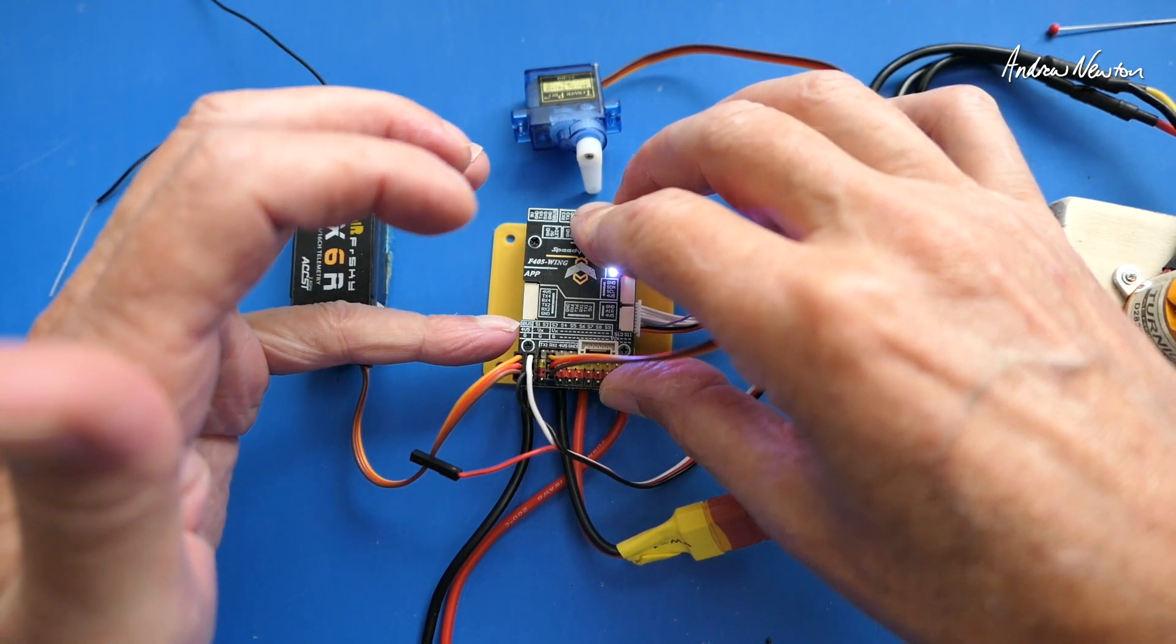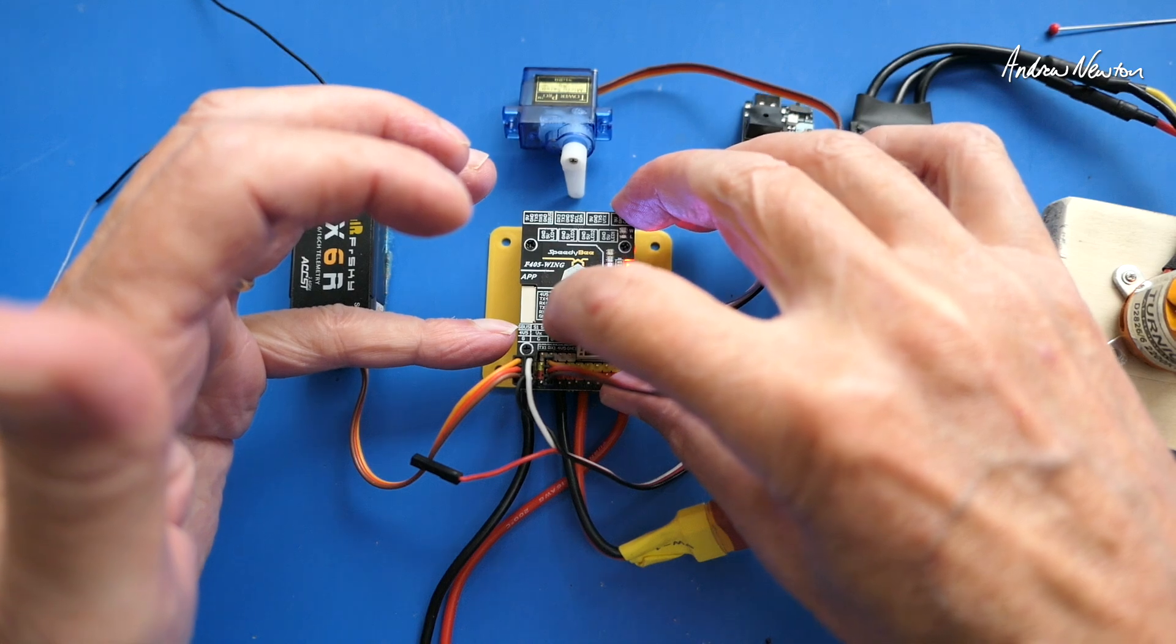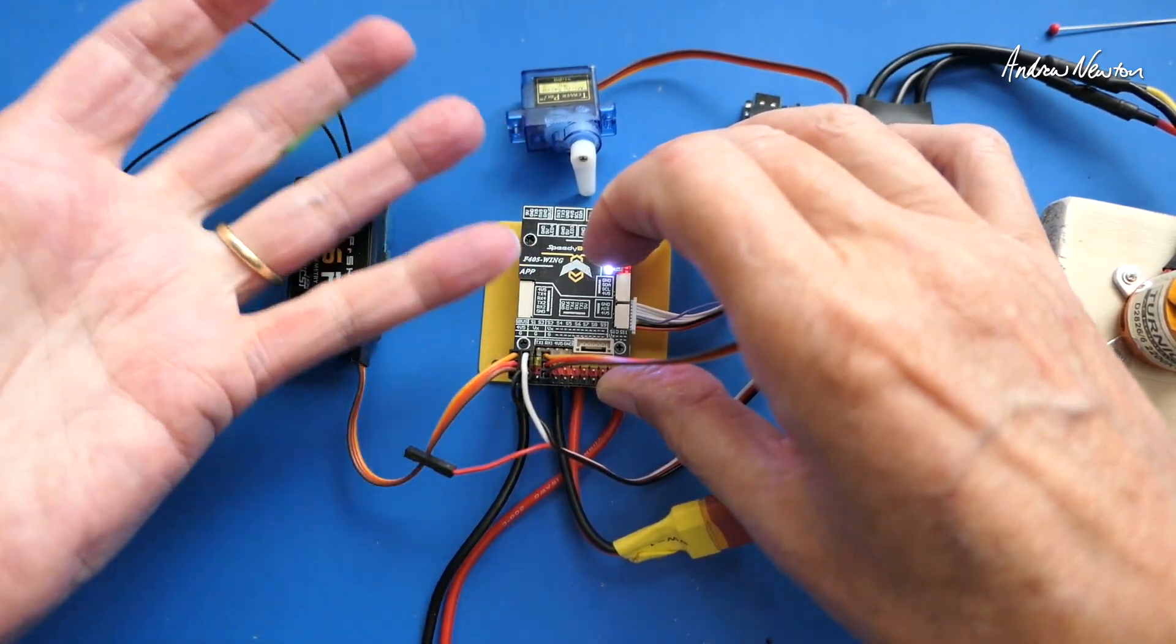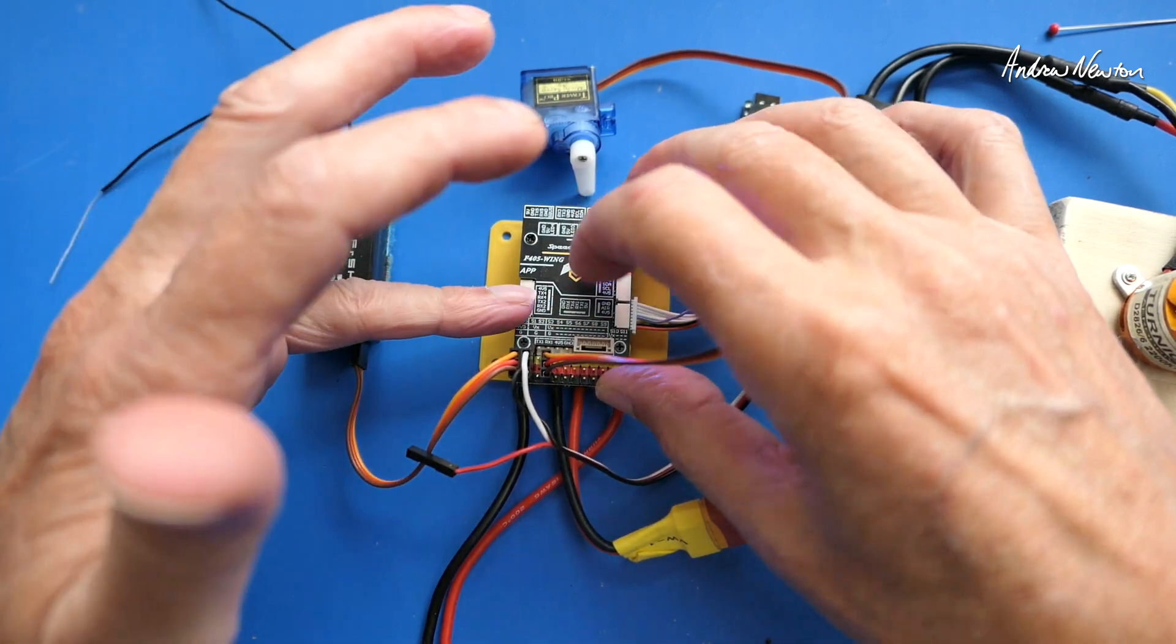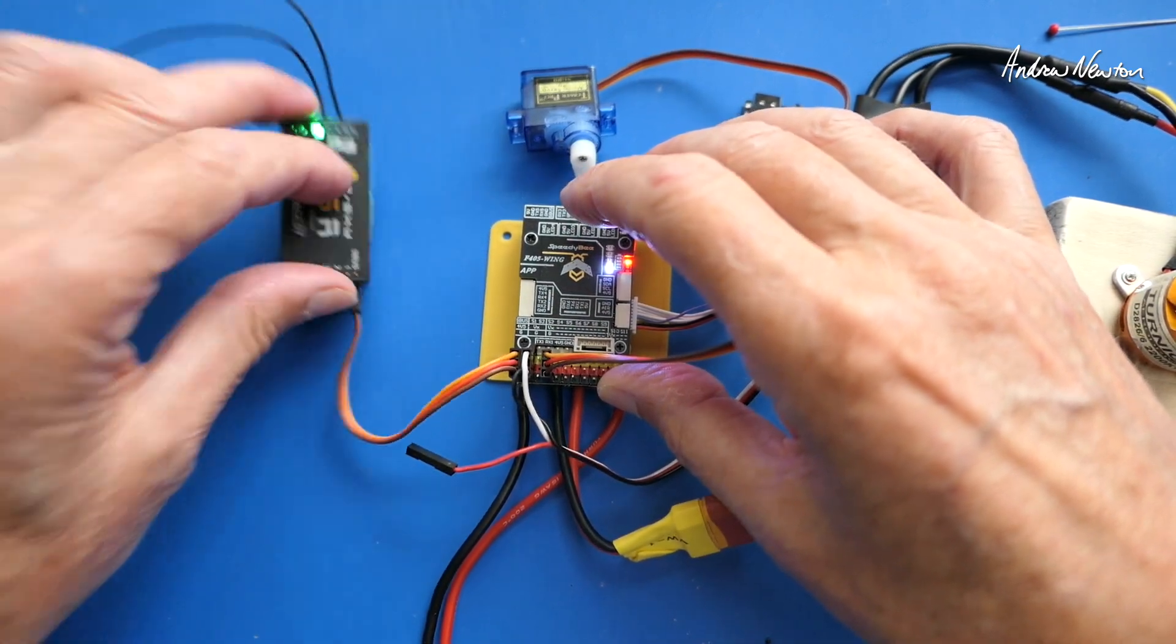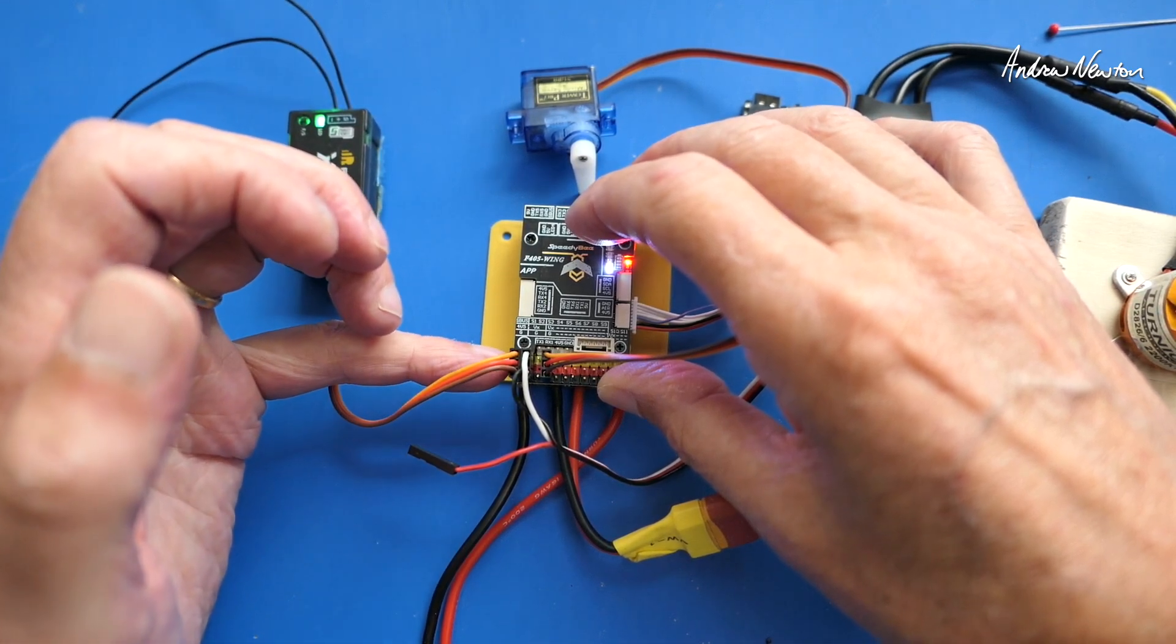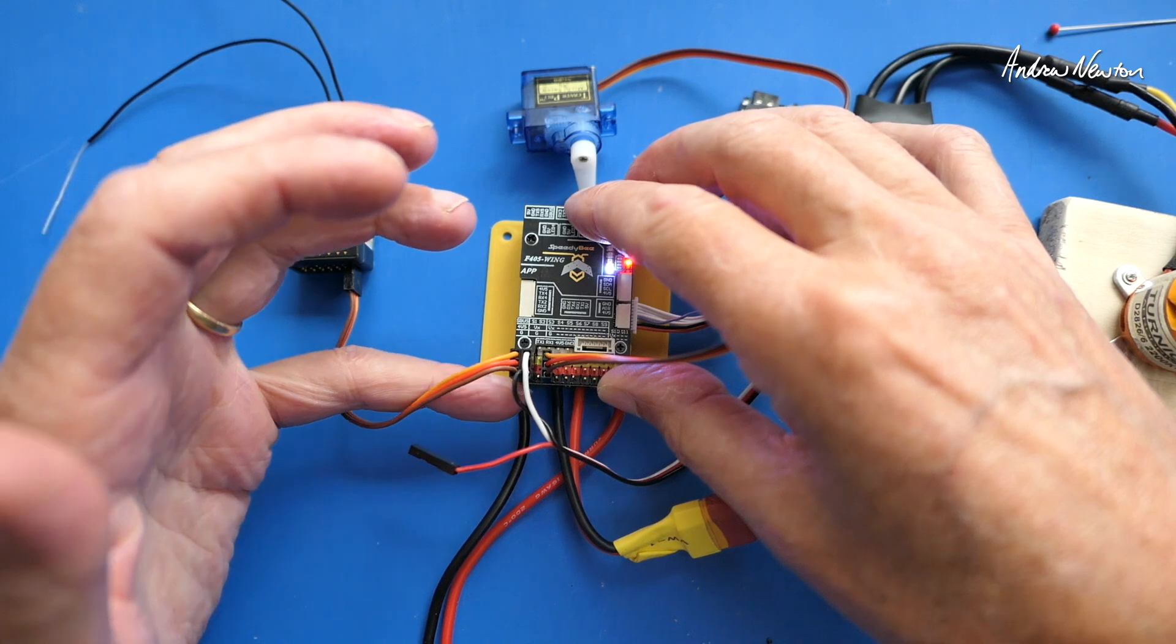And the SBUS pin there is connected to the RX2 pin, but there's an inverter in between them because SBUS is an inverted signal compared to normal signal conventions for UARTs. So the receiver is connected to SBUS, 5 volts or 4.5 volts and ground.